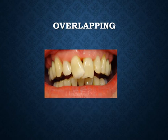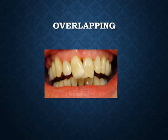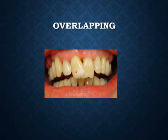Overlapping of teeth is the abnormal position of the crown of a tooth in the dental arch, while the root maintains a normal position in the jaw. When overlapping involves the centrals, laterals, and canines in the same direction, it is called imbrication — a specific type of malocclusion.